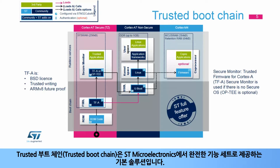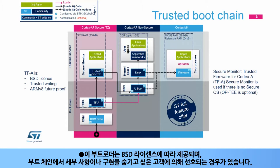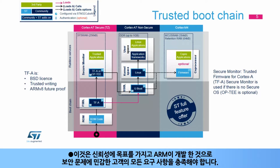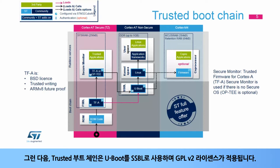The trusted boot chain is the default solution delivered by STMicroelectronics, with a complete feature set. It uses the ARM trusted firmware for Cortex-A, also known as TFA, as FSBL, because this bootloader is delivered under the BSD license, sometimes preferred by customers who want to hide implementation details in the boot chain. It was developed by ARM with the target to be trusted, fulfilling security requirements, and it is widely used on ARMv8 architecture platforms. The trusted boot chain uses U-Boot as SSBL, covered by a GPLv2 license.